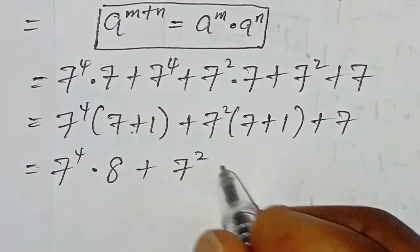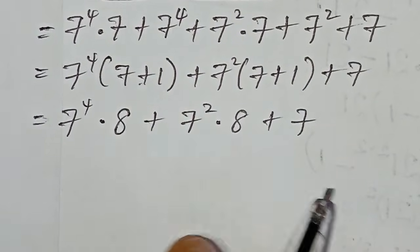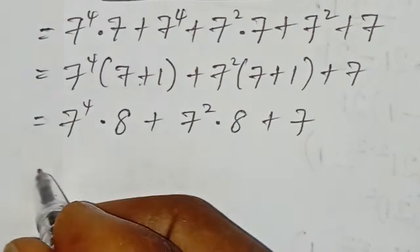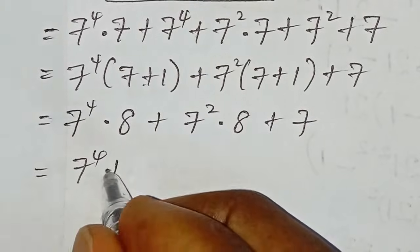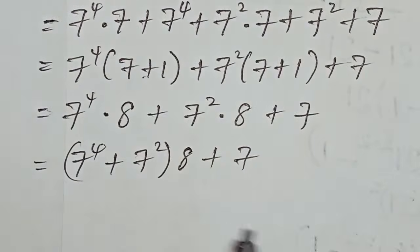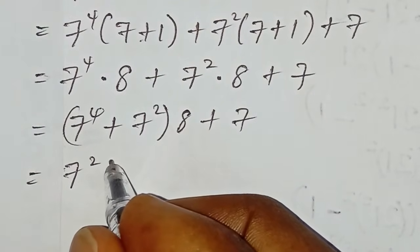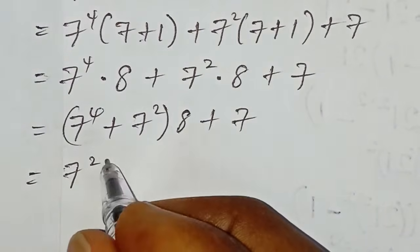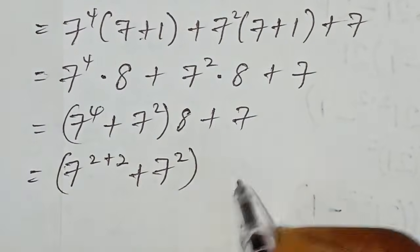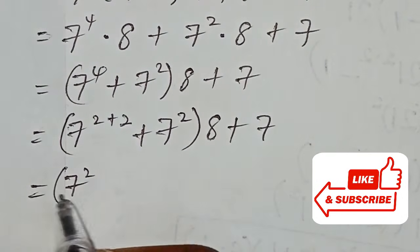We can factor out eight from the first two terms. So we have eight multiplied by the bracket seven to the power of four plus seven to the power of two, plus seven. Now we break down seven to the power of four as seven to the power of two plus two, giving us seven to the power of two multiplied by seven to the power of two plus seven to the power of two, close brackets, multiplied by eight, plus seven.